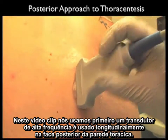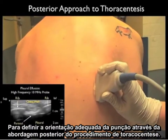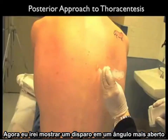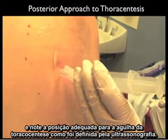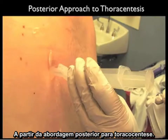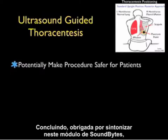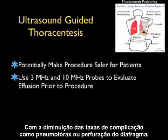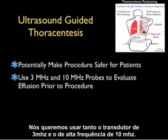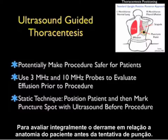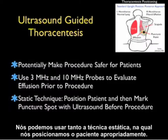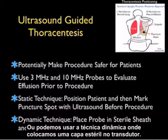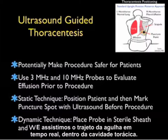In this video clip, we'll place the high-frequency 10 megahertz probe along the posterior aspect of the chest wall to define the proper orientation for the puncture in the posterior approach to thoracentesis. The needle can then come in directly underneath the probe. This is the proper position for the thoracentesis needle as defined by sonography from the posterior approach. In conclusion, sonography can potentially make the procedure safer for our patients with a decrease in complications such as pneumothorax or perforation of the diaphragm. We use both the 3 megahertz and 10 megahertz probes to fully evaluate the effusion in relation to the patient's anatomy. We can use a static technique — marking the puncture spot prior to the procedure — or a dynamic technique, placing the probe in a sterile sheath and watching the needle in real time enter the chest cavity.